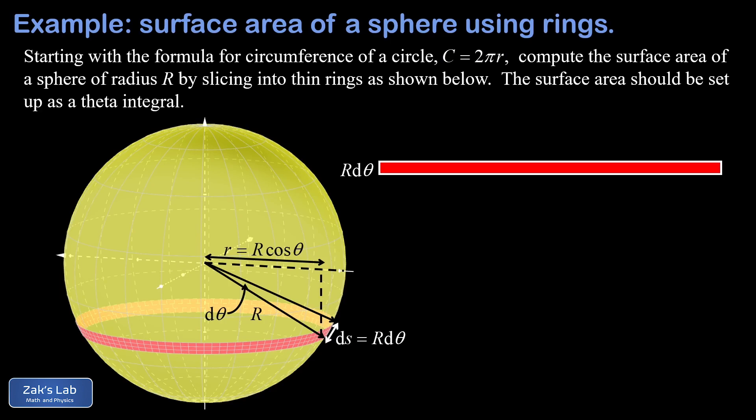But we have to be really careful to use the little r here, because the radius of our rings is changing as a function of theta. So after cutting and unrolling this ribbon, we end up with a length on this rectangle of two pi big R cosine of theta.